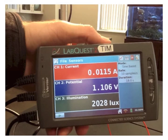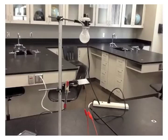Now this looks pretty good. Go ahead and write down your current, potential, and illumination values in your data table. Again, the setup will look something like this.